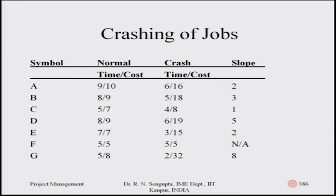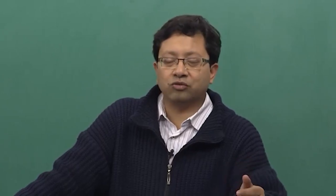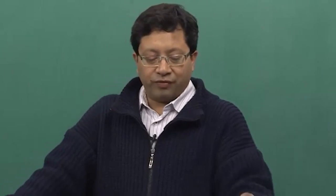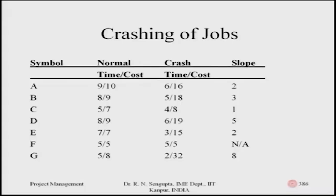For job A, the cost difference is sixteen minus ten, which is six, and the duration difference is nine minus six, which is three. So six divided by three gives a slope of two — meaning the marginal cost increase for one day's reduction for activity A is two units. For job B, it is eighteen minus nine, which is nine, divided by eight minus five, which is three — so nine divided by three is three.